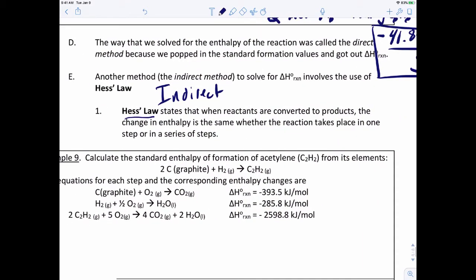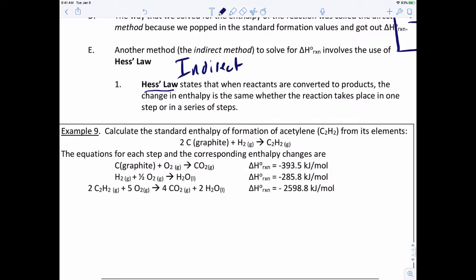So let's take a look at a problem and how this works. Here's our reaction: we got two moles of graphite plus hydrogen gas yield C2H2, which is acetylene. We could calculate this using the direct method and find the enthalpies of formation for each of these species, and that's totally okay.